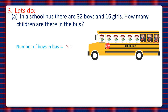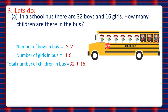Number of boys in the bus is equal to 32, and number of girls in the bus is equal to 16. So total number of children in the bus is equal to 32 plus 16. Let's split 16 and write 10 plus 6 instead of 16, and 32 will be written as it is. Now we'll add 32 plus 10, that's 42. And we'll add 6 to 42, and the answer becomes 48.